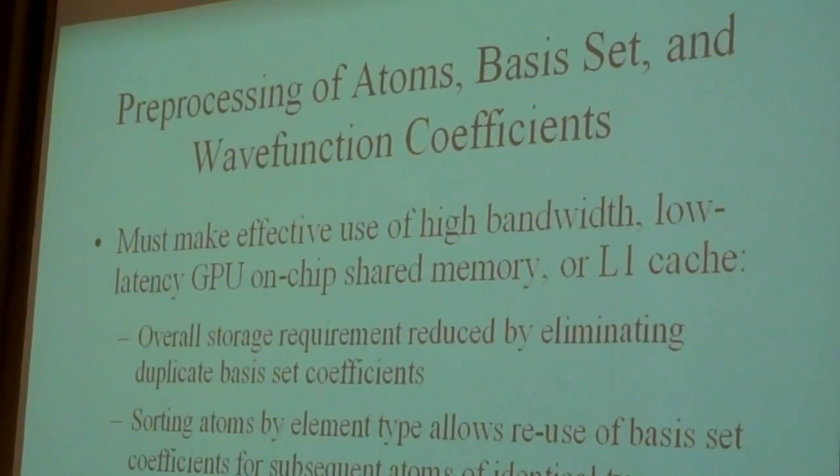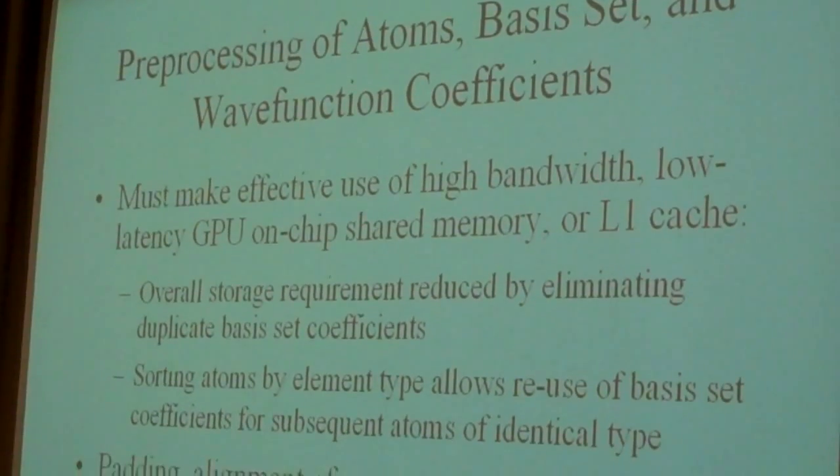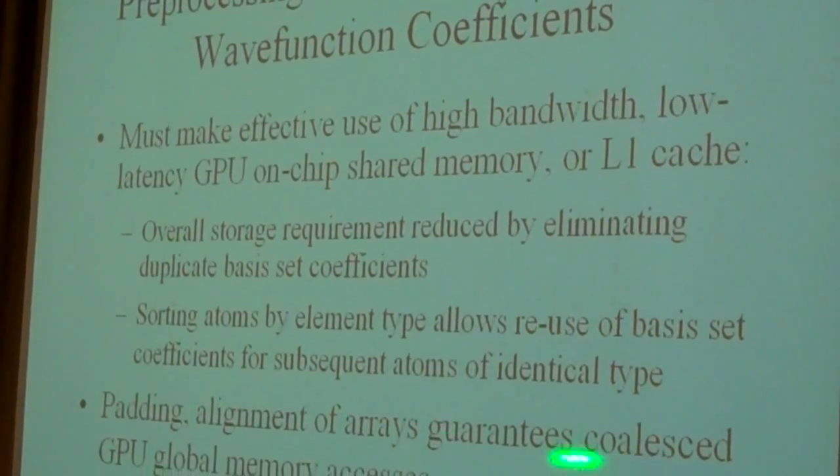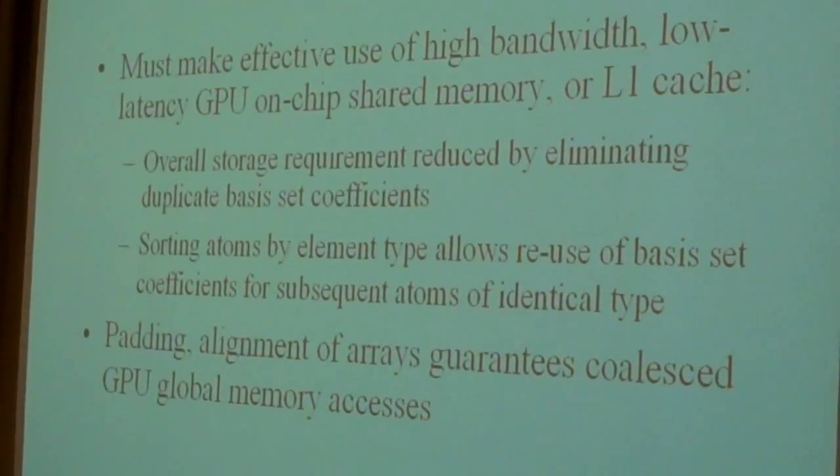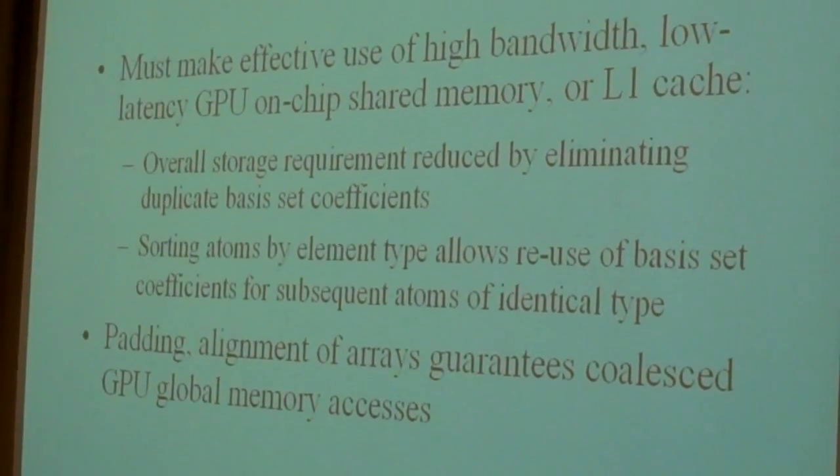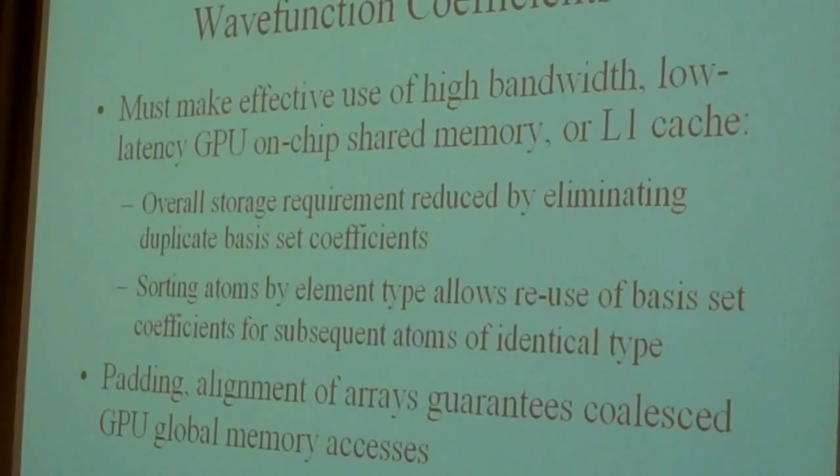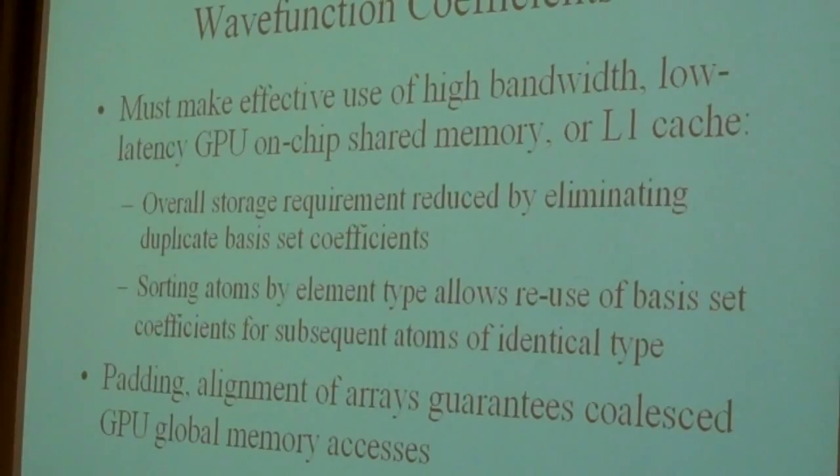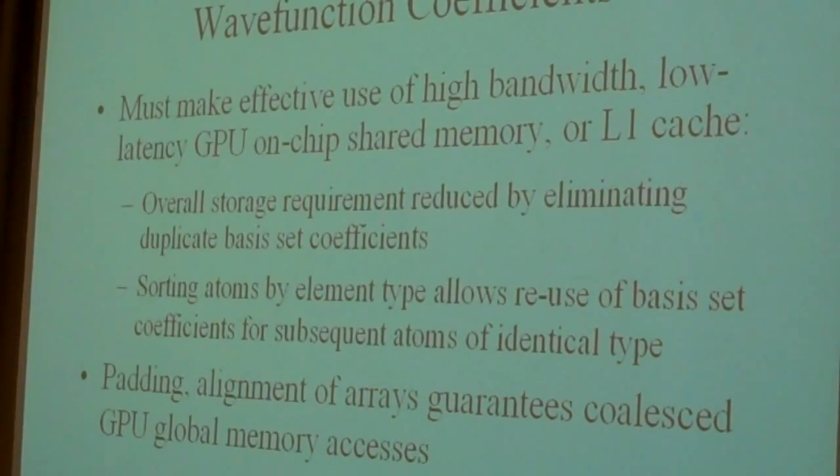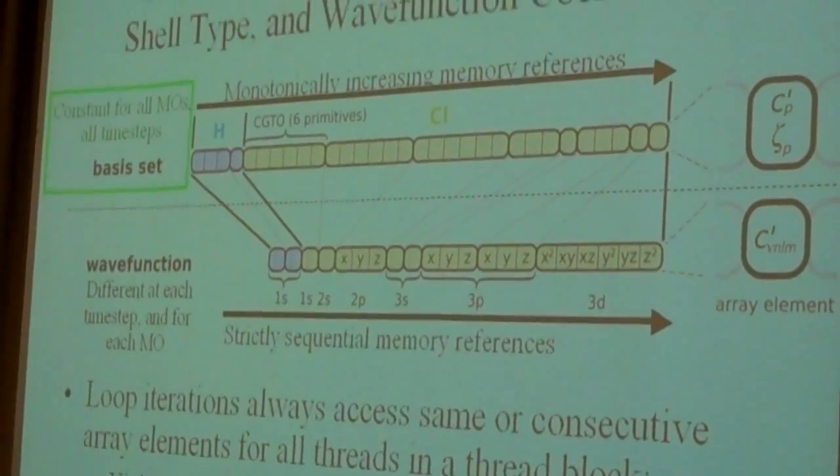So I described that we do all this pre-processing and sorting. The other thing that we do is we pad out all of the arrays that we're going to access to guarantee that they're coalesced for anything that we read in and out of global memory. And then it makes it simpler for us to have arbitrary thread block sizes, and we don't have to have any branching inside of our code to say, well, is our thread beyond the end of some array? You don't have to worry about that then. And it makes it a lot easier to write the code.